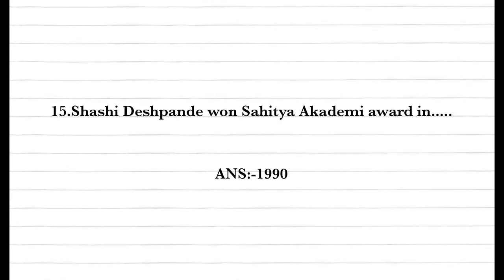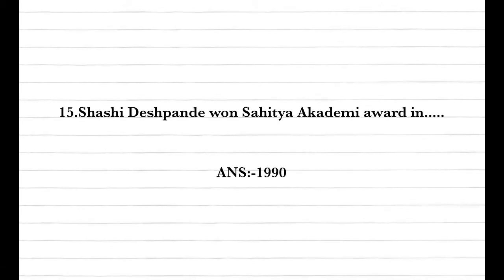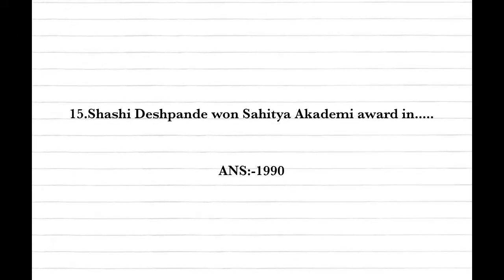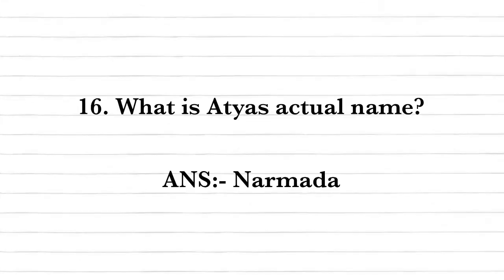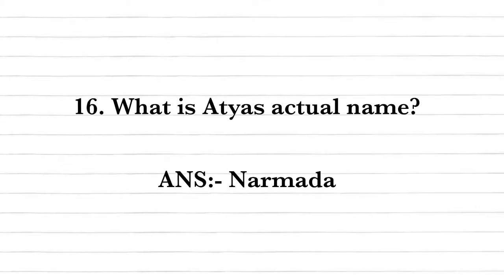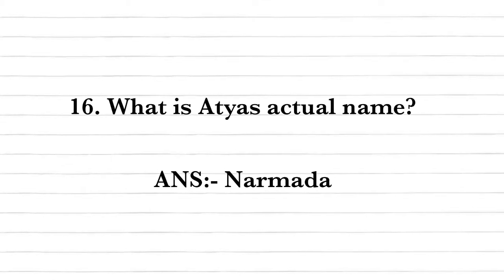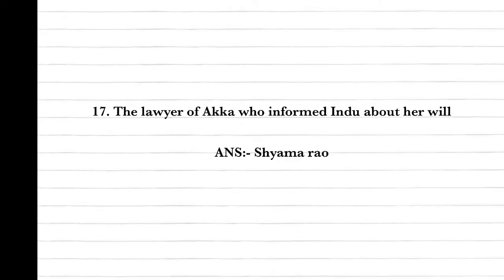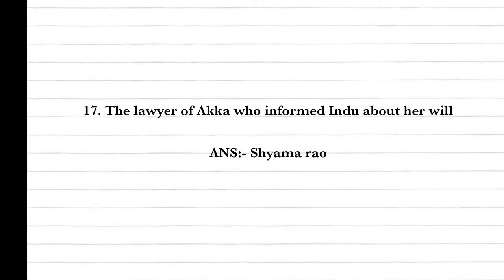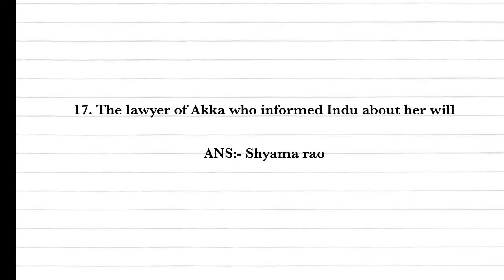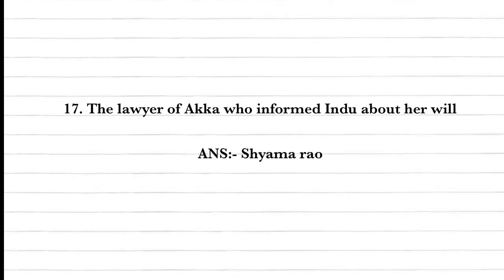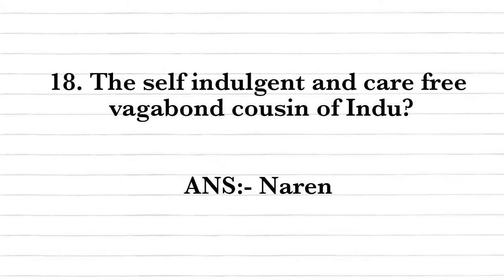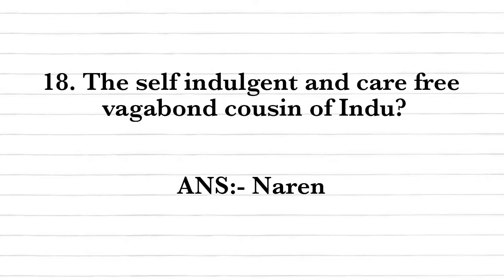Question fifteen: What is Atiya's actual name? Answer: Her actual name is Narmada. Question seventeen: Who is the lawyer of Akka who informed Hindu about her will? Answer: Shamarahu. Question eighteen: Who is the self-indulgent and carefree vagabond cousin of Hindu? Answer: Nare.